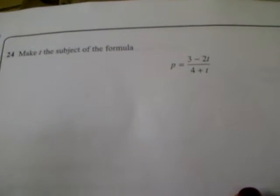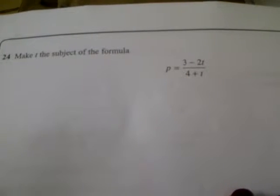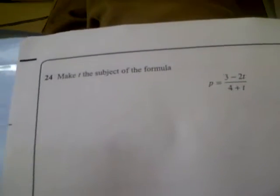Now 21, 24 says make T the subject of the formula P equals 3 minus 2T over 4 plus T. Okay, let's do this.